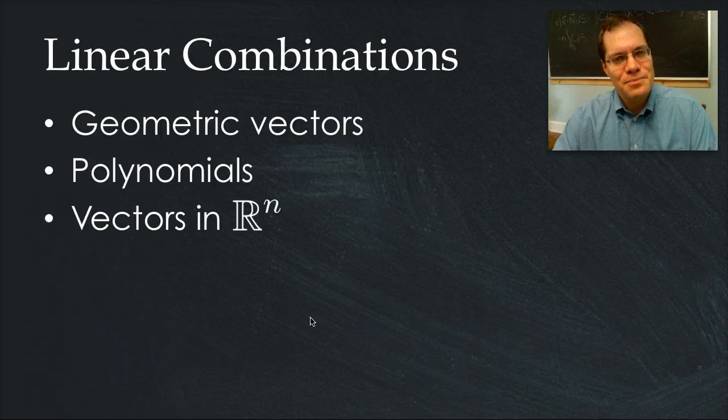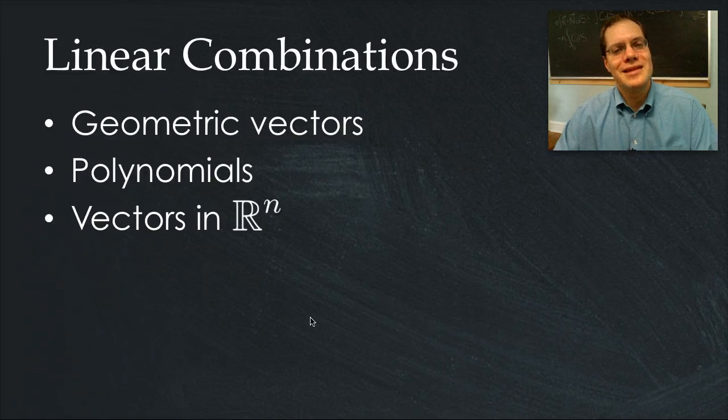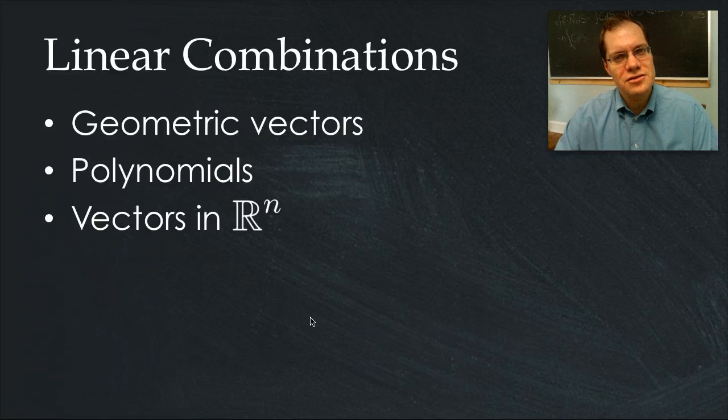The final important point is to treat all objects on their own terms. When dealing with geometric vectors, we'll talk about lengths and angles. When we talk about polynomials, we'll treat them as functions. And when we talk about vectors from R^n, we'll talk about their entries.